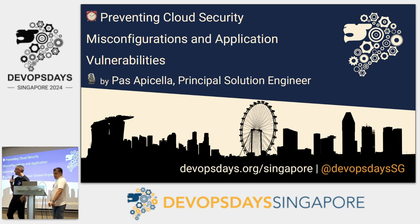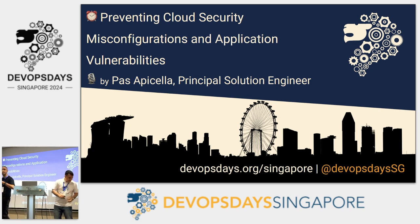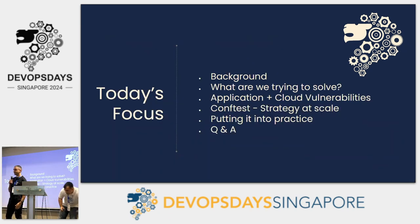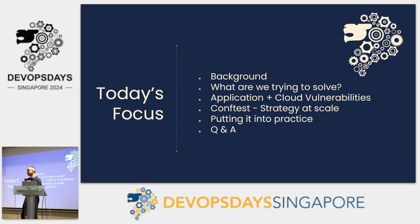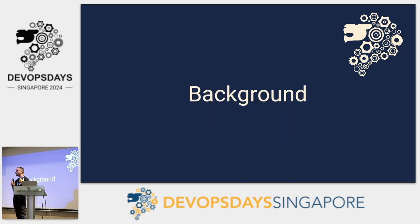Thank you everyone, nice to be here. In ignite format, five minutes, every 15 seconds the slides go past, so we need to move pretty fast. Hopefully in five minutes I can explain what I want to do today. I'm going to talk about application and cloud misconfigurations, and some strategies around what organizations do because of the noise that these application vulnerabilities bring into the secure DevOps pipeline.